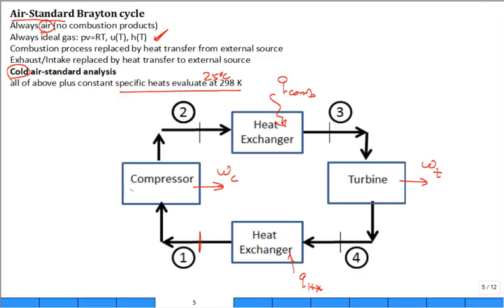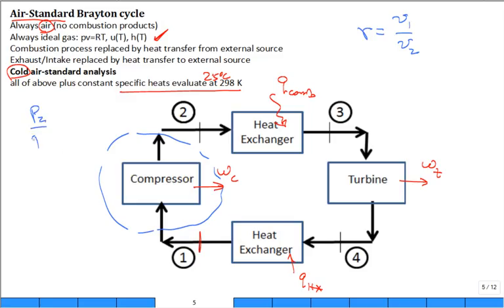One potentially confusing point: coming off the Otto and diesel cycle, you're used to the parameter R — the compression ratio — which described the change in volume from large to small in a closed system. But the Brayton cycle uses an open system analysis around each component. For the compressor, they don't specify a volume ratio V2/V1; they specify the pressure ratio P2/P1. These are not the same thing.